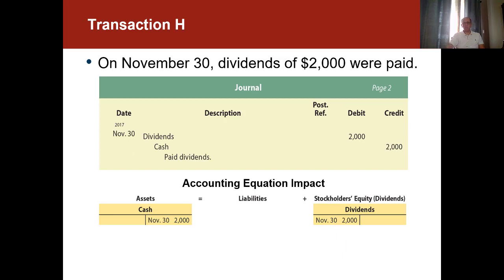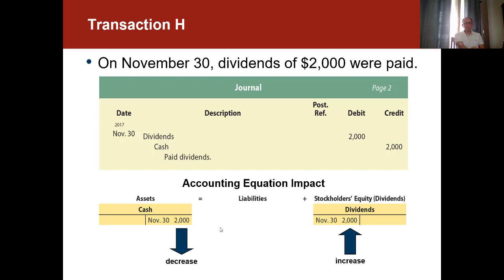The last transaction, transaction H: on November 30th, dividends of $2,000 were paid. Again, the key word is 'paid,' so I'm thinking cash, and cash is going down — so it has to be credited. Dividends have a debit nature; whenever they increase, they get recorded on the debit side. So we debit dividends because it's going up, and we credit cash because it's going down. So: debit dividends, credit cash. I'll stop here, and in the next video we're going to practice more.